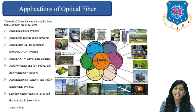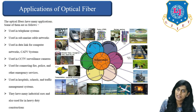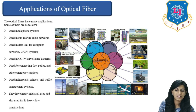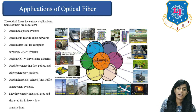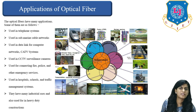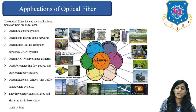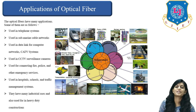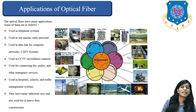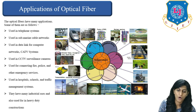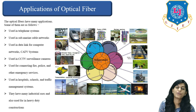Further examples include telephone systems, submarine cable networks, data link computers and CATV systems, CCTV surveillance, and connecting fire, police, and emergency services. Fiber optics is also used in hospitals, schools, and traffic CCTV monitoring, as well as in heavy-duty industrial construction. This covers what fiber optics is, its important applications, and how it can be manufactured.